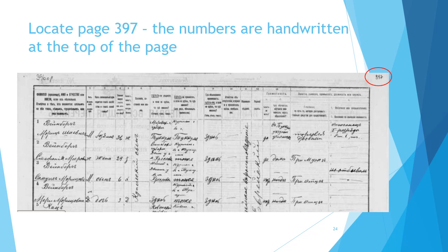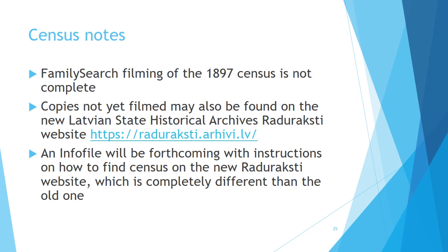FamilySearch's filming of the 1897 census is not complete. Records that haven't been filmed can be found on the new Latvian State Historical Archives Radaratski website, and we'll be providing a slide presentation or info file with instructions on how to find the census on that new website, since it's completely different from the old one. Unfortunately, some census files have been split into two parts on the new site, making them somewhat more problematic to navigate than the old format or the JewishGen listing. This is something we hope to correct in the future.